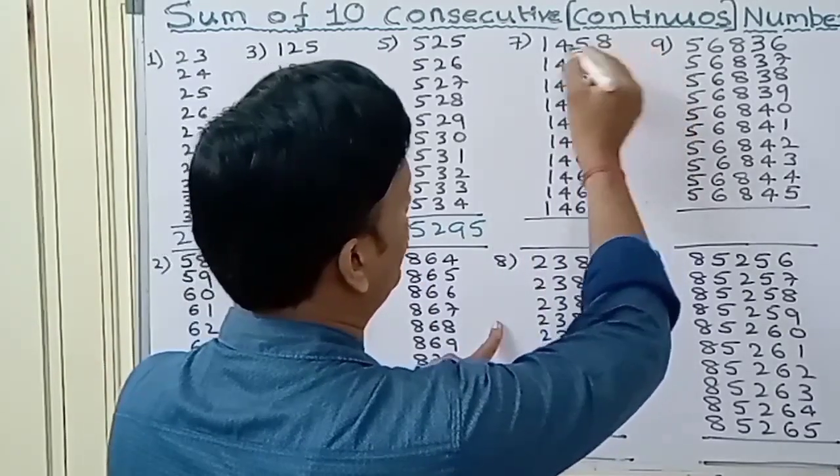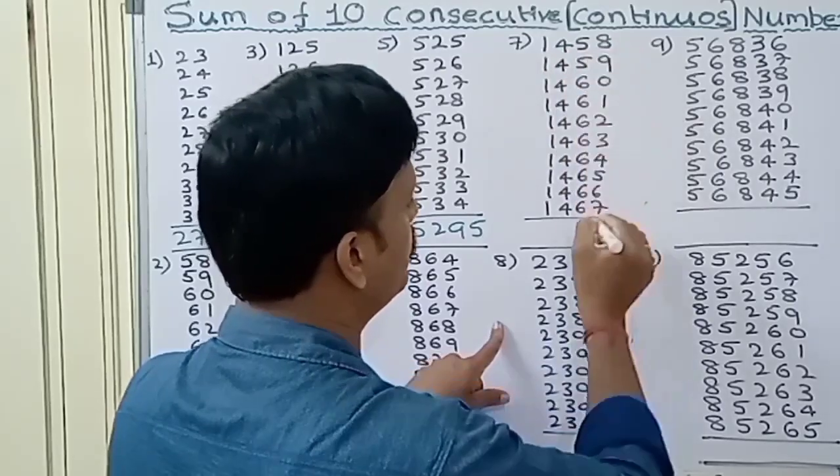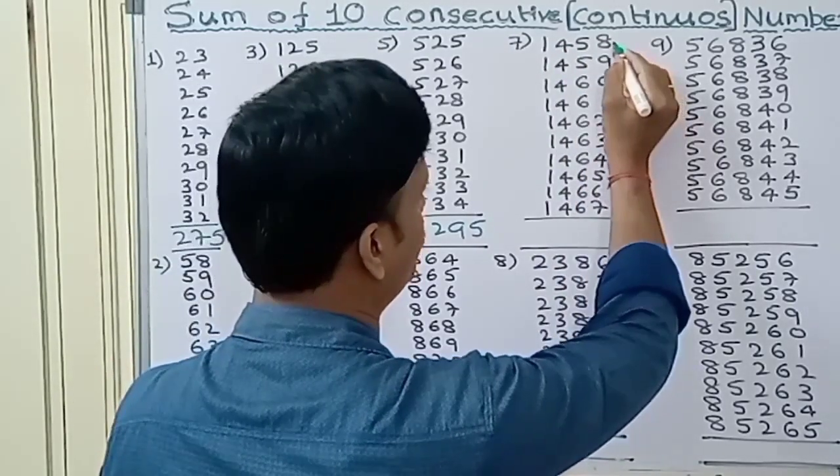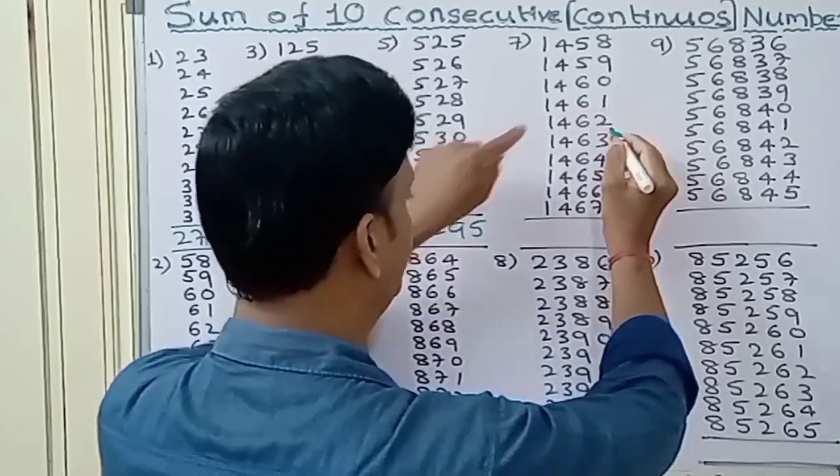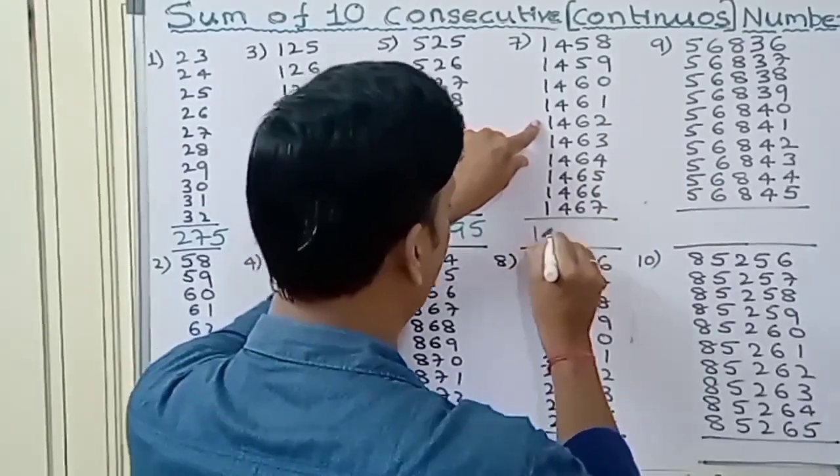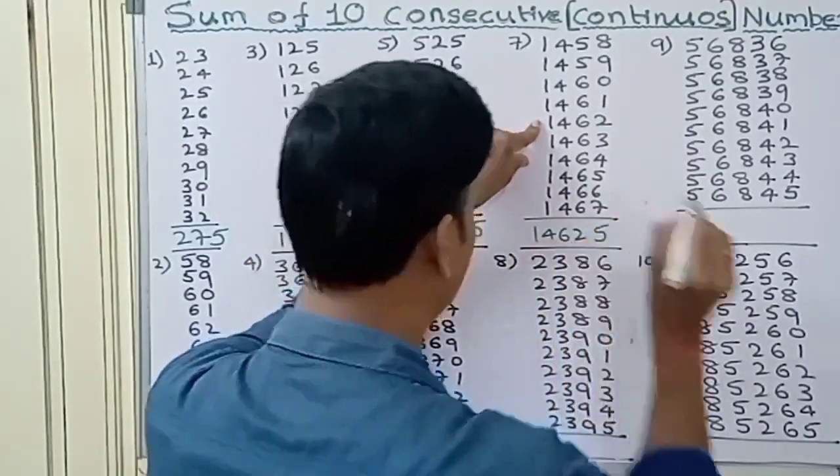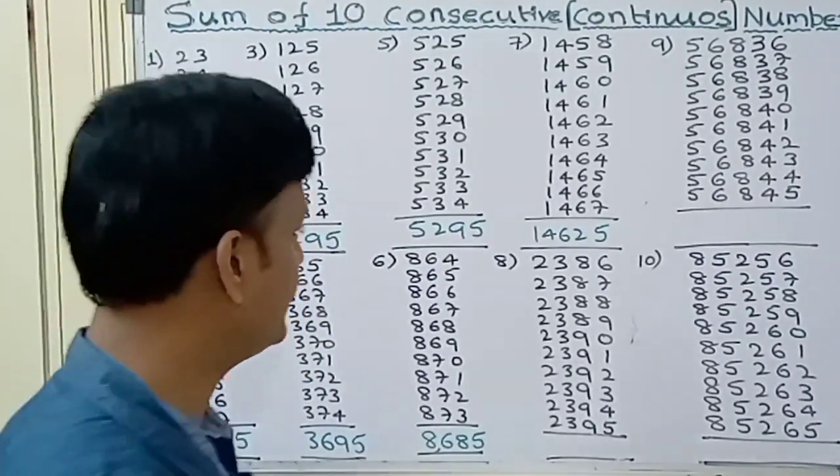Next, 1458 to 1467, 10 integers. Count 1, 2, 3, 4, 5. The 5th entry is 1462. Put 5. 14625 is the answer.